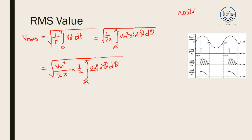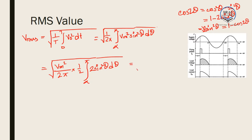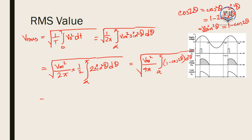Using the trigonometric identity: cos 2θ equals 1 minus 2 sin²θ, we get 2 sin²θ equals 1 minus cos 2θ. Substituting, we get the square root of Vm² over 4π times the integral from alpha to pi of (1 minus cos 2θ) dθ. Bringing Vm and 4 out and applying the square root gives Vm over 2 times the square root of 1 over π. The integration result is θ minus one half sin 2θ evaluated from alpha to pi.